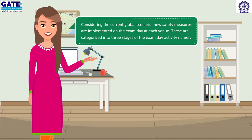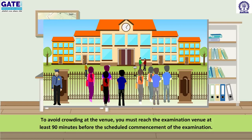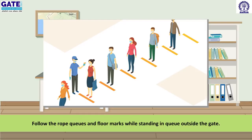Considering the current global scenario, new safety measures are implemented on the exam day at each venue. These are categorized into three stages of the exam day activity. The first stage is pre-examination preventive measures for COVID-19. To avoid crowding at the venue, you must reach the examination venue at least 90 minutes before the scheduled commencement of the examination. Follow the rope cues and floor marks while standing in queue outside the gate.